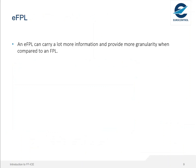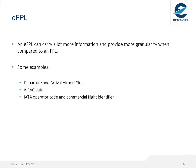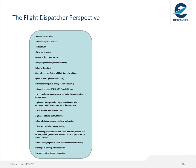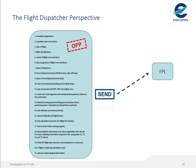The eFPL has been designed to reduce the limitations of the current FPL. It can carry a lot more information and provide more granularity. From a flight dispatcher perspective, there is little change — the OFP (Operational Flight Plan) contains a lot of information, but when it triggers an FPL, much data and granularity is lost. When it triggers an eFPL, the quantity and quality of data transmitted is much higher.